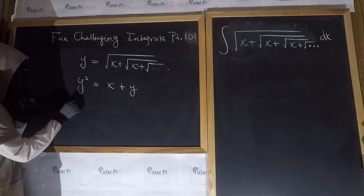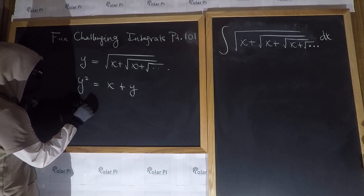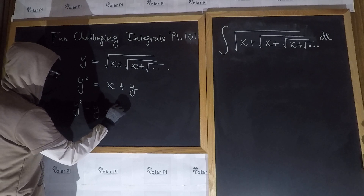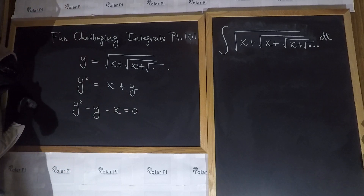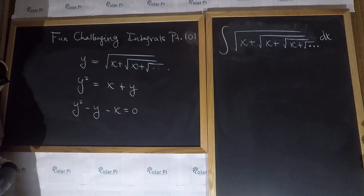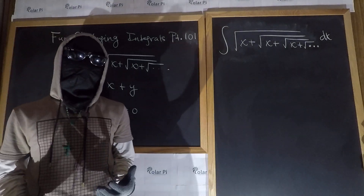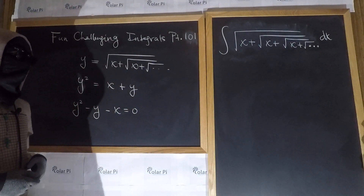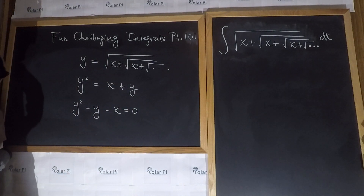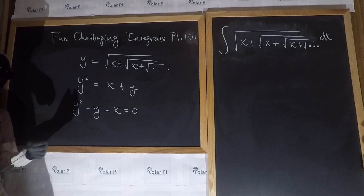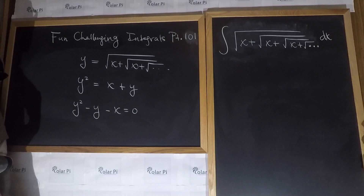Then we can write this as y squared minus y minus x is equal to zero. And this here is what we call a quadratic in y — it's a quadratic, just with variable y. And therefore, this negative x here is a constant.